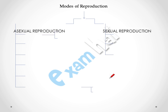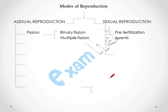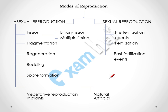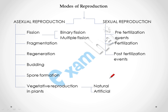Further we will discuss the various types of asexual and sexual reproduction. In asexual reproduction we will discuss fission, fragmentation, regeneration, budding, spore formation, and vegetative reproduction in plants. In sexual reproduction, we will discuss pre-fertilization events, fertilization, and post-fertilization events.